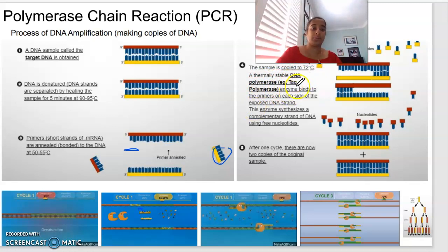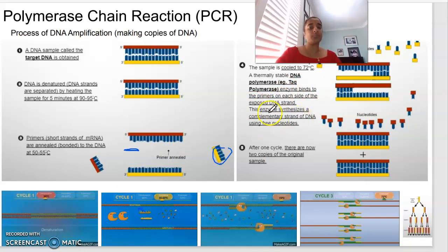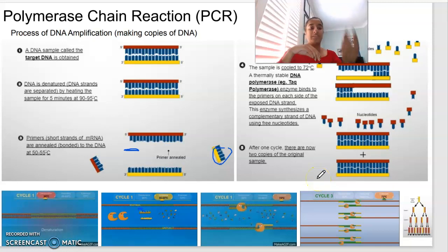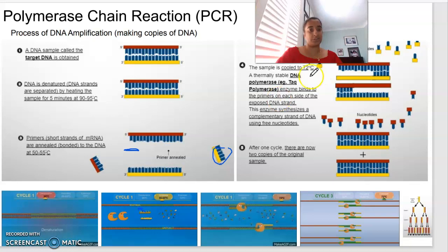The sample is then cooled to 72 degrees, where polymerase — in this example TAQ polymerase — binds to the primers on the exposed DNA strand and synthesizes a complementary strand. After one cycle, there are two copies of the original sample; do it again, four copies; again, eight copies — exponential growth. The three temperatures to remember: denaturation at 90 to 95 degrees, annealing at 50 to 55 degrees, and polymerase extension at 72 degrees.